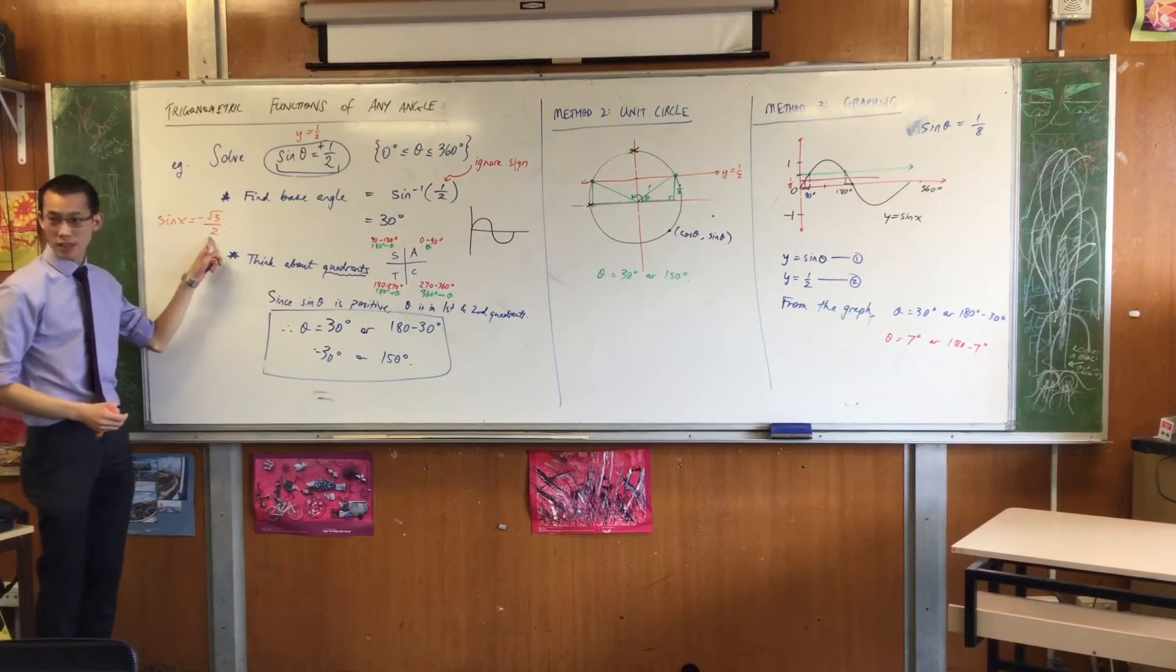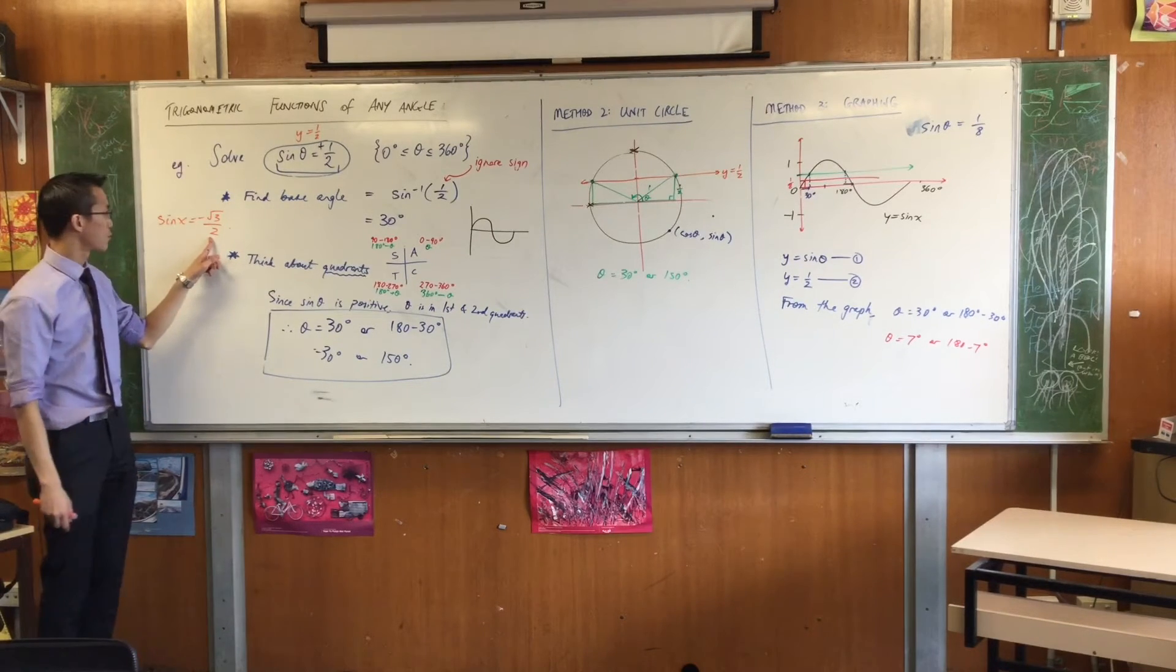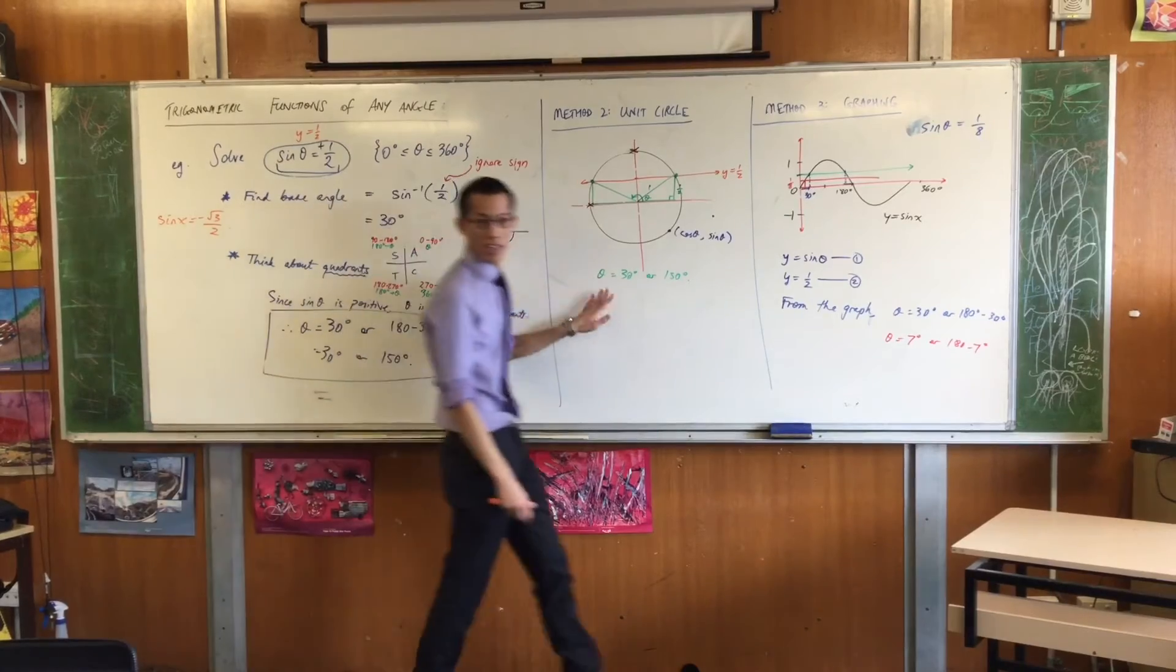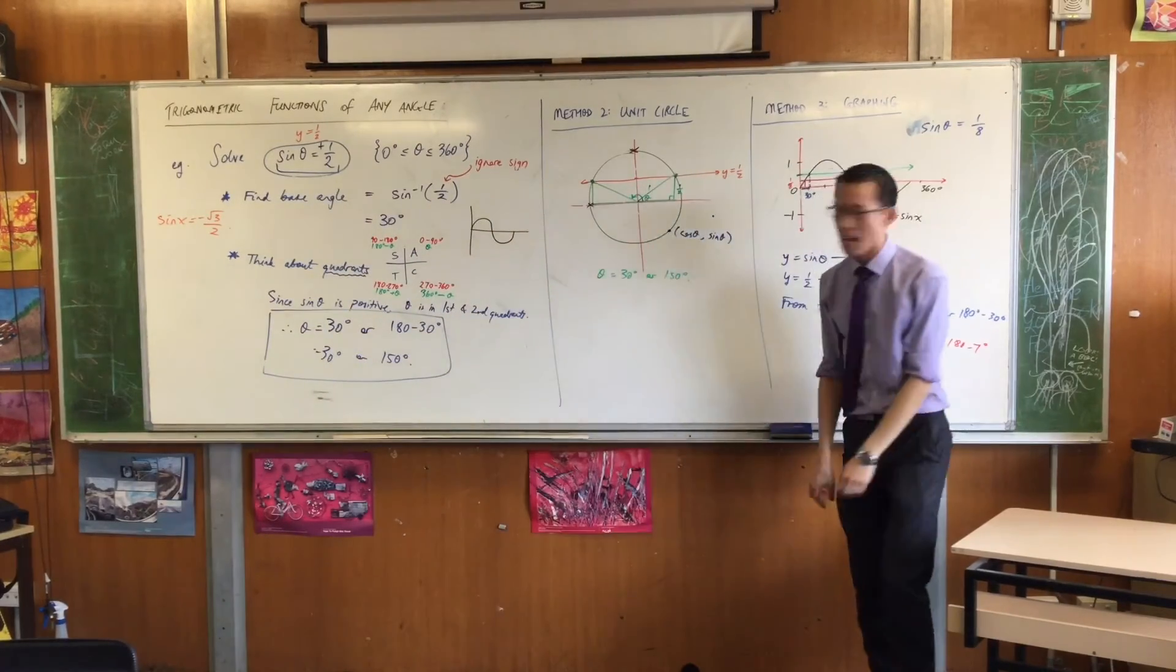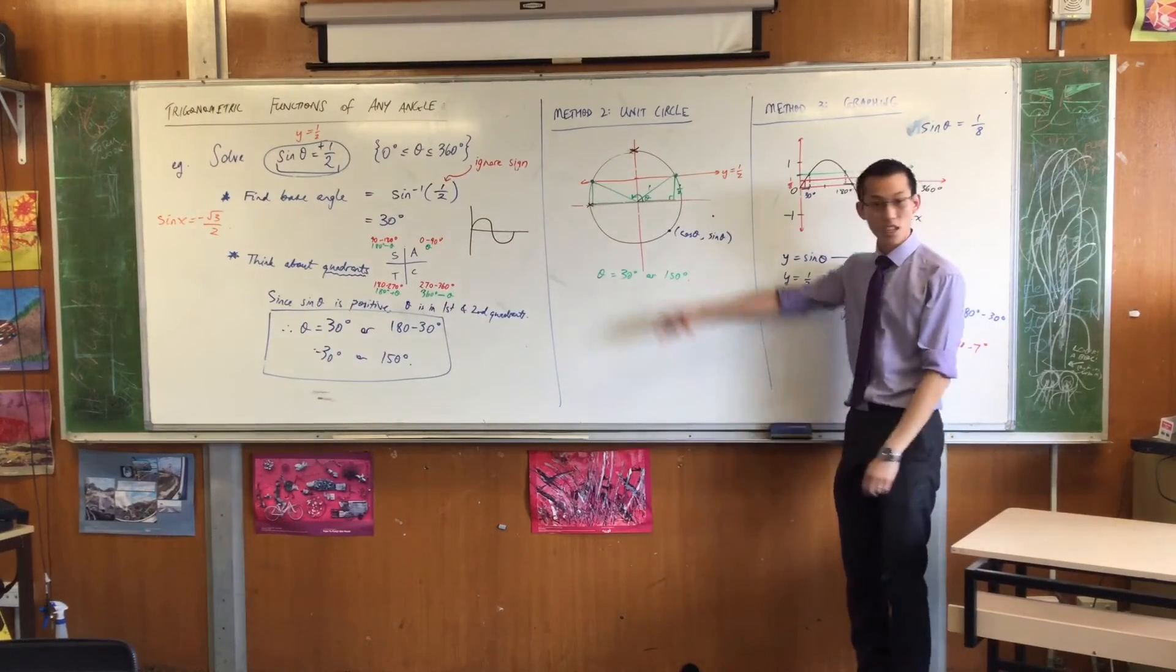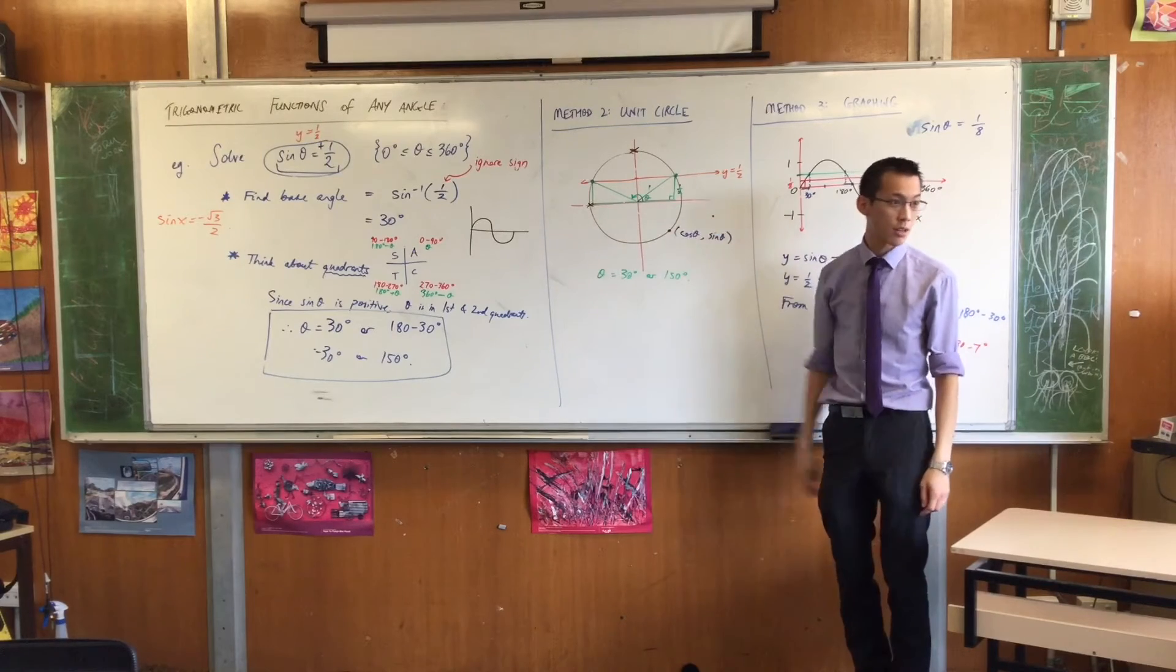Sine x equals minus root three on two. Now when I have a look at this, again, it's an exact value, right? I can come over here and I can say minus root three on two, that's going to be on the bottom half of the circle, isn't it?